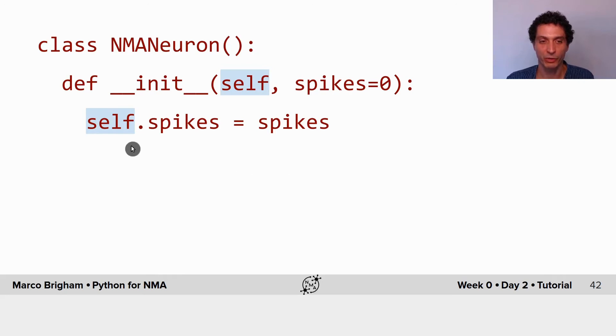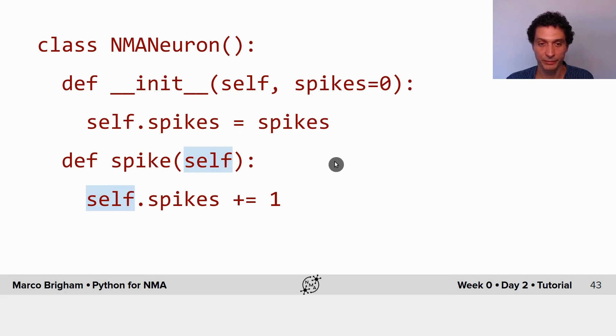So self refers to the variables and functions inside the class, which are the attributes and the methods of the class. Here we define an attribute, and here we define a method. This method, when it's called, increases this attribute, the number of spikes, by one unit.